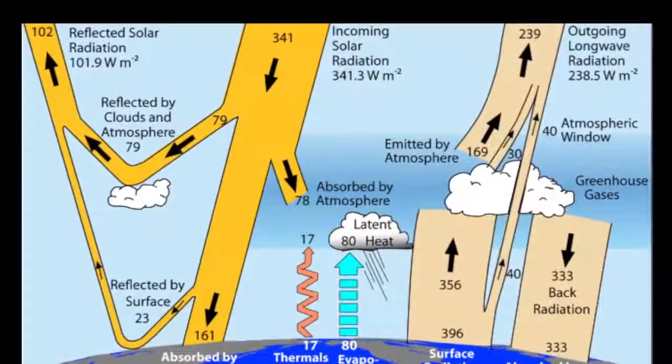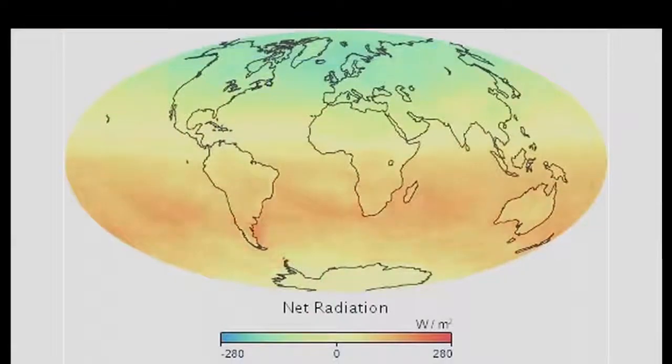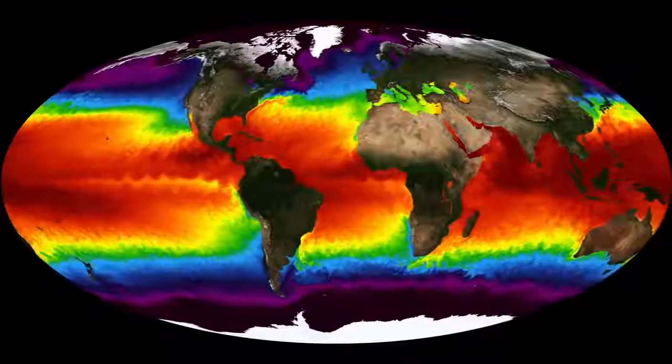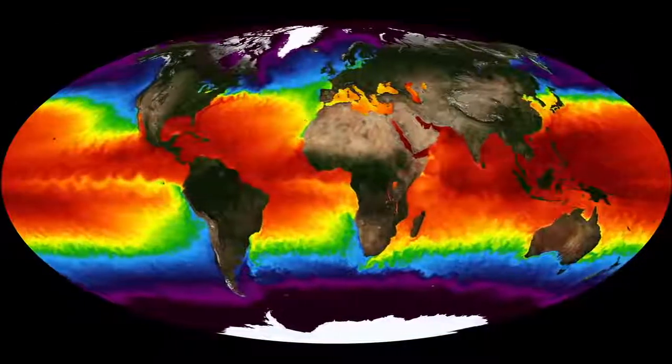The diagram represents the energy budget from 2000 to 2004. It's important to know the time represented because incoming and outgoing energy in the Earth's system actually vary over short and longer time periods.